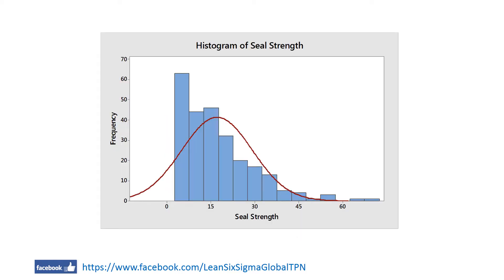We use the force required to open the bag to study the process. The operator randomly samples 250 pairs from a batch and measures their shield strength. Look at this histogram of the shield strength.